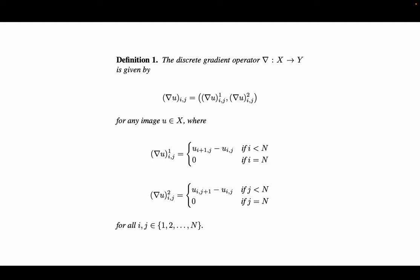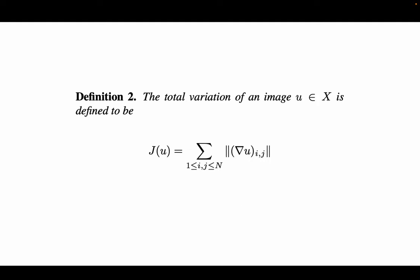So first we need to give a definition of the discrete gradient operator using his paper. And next we define what is total variation of an image u, which is simply the sum of the norm of its gradient at each point of the image.